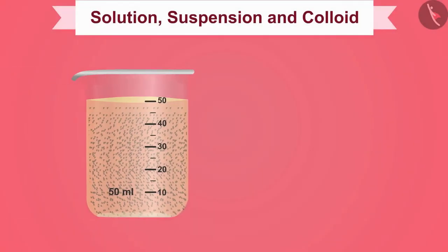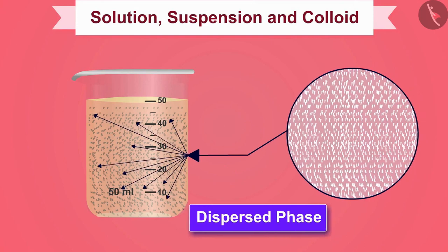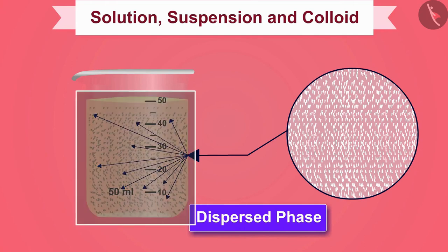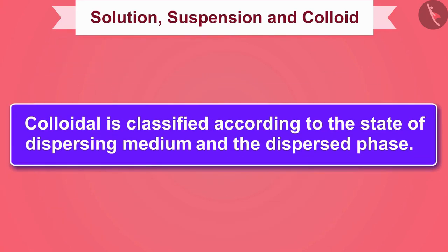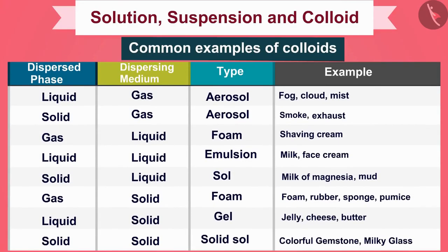The dispersed particle which remains in colloidal form is called the dispersed phase. The component in which the dispersed phase is suspended is called the dispersing medium. Colloids are classified according to the state of the dispersing medium and the dispersed phase, and here you can see some examples of this.